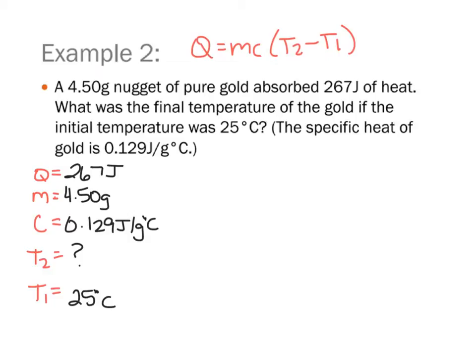So in this example, I have a 4.50 gram nugget of gold. And the fact that it says gold right there is how I would know that this is the specific heat, because I could look that up off of a specific heat table, considering that that is a physical constant for a substance. So by indicating that it's gold, I can also look up that it's that number. It absorbs 267 joules of heat. So that would be the quantity of heat, or Q.